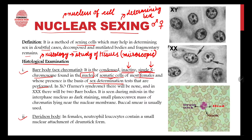The genotype of a normal female is XX. One X is the active X chromosome, and the other is the inactive X chromosome — this inactive one is what we call the Bar body. So in a normal female, there is one Bar body.